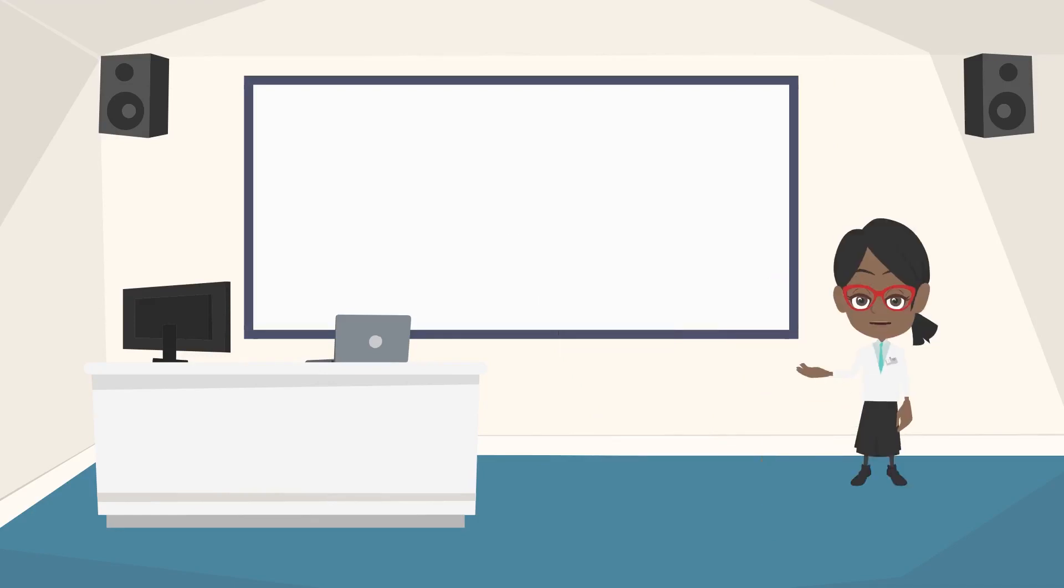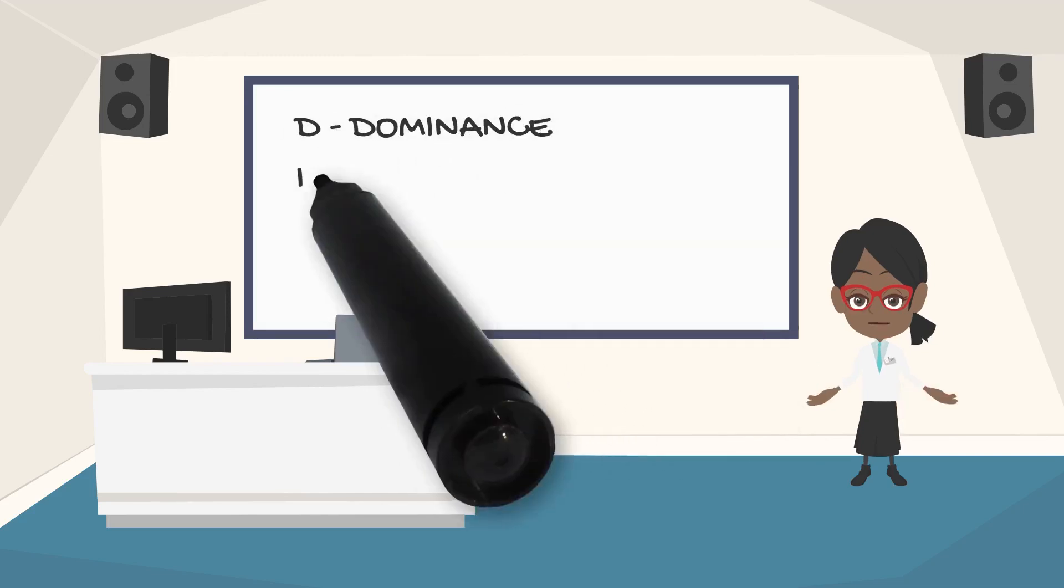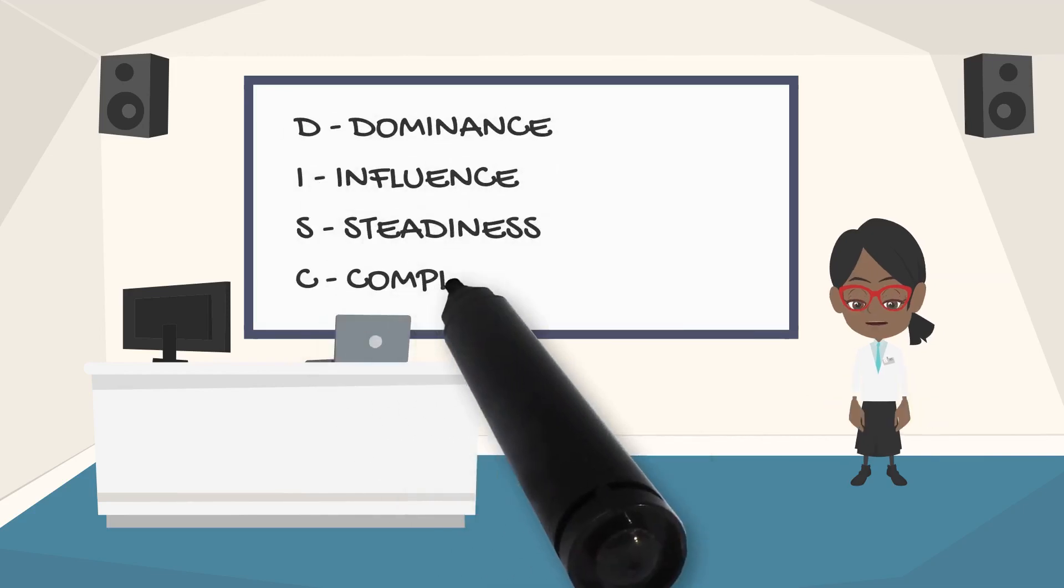Everyone is different, right? But the cool thing is that everyone in the world is predictably different. Human behavior can be predicted. One can easily predict how a person will act or react in a given situation by just knowing his or her behavior styles. Using the DISC model, people only have four types of behavior.